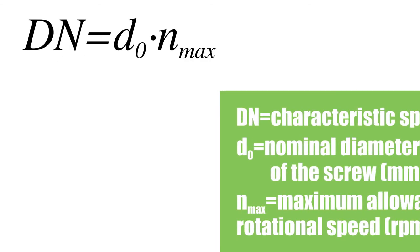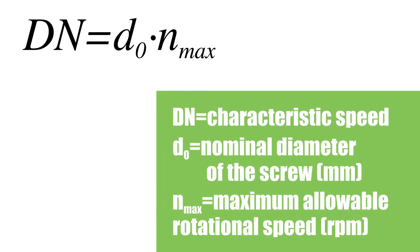Characteristic speed is often referred to as the DN value of the nut and is determined by multiplying the nominal diameter of the screw by the maximum allowable rotational speed. DN values are specified by the manufacturer and typically vary between 60,000 millimeters per minute and 150,000 millimeters per minute, depending on the type of ball nut.